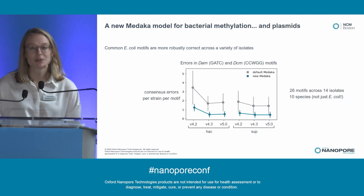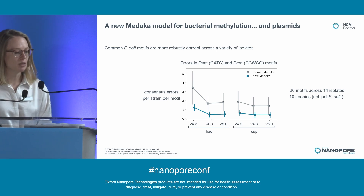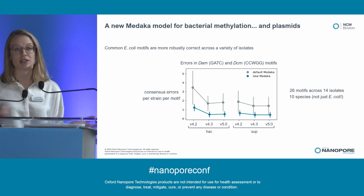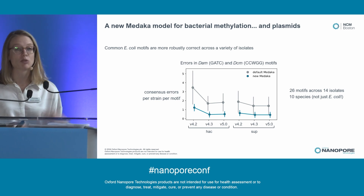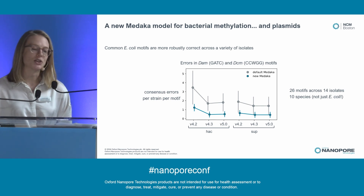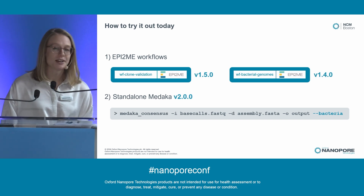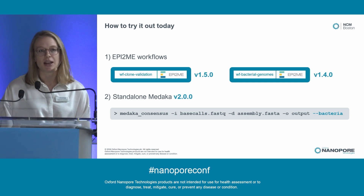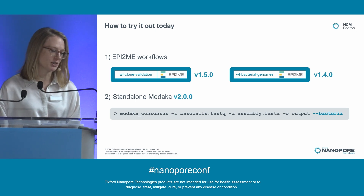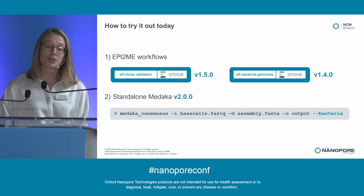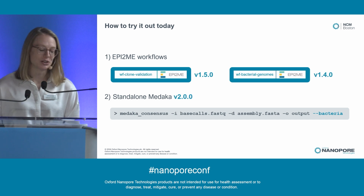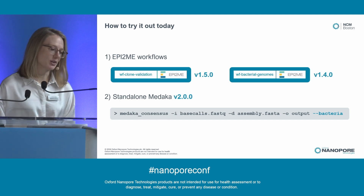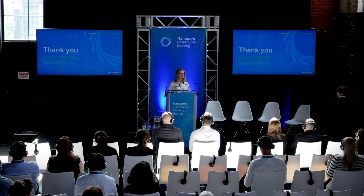For plasmids, we're often thinking about two particular motifs — GATC and CCWGG — that are common in E. coli. The new Medaka model provides significant improvements in these motifs, looking across a set of 14 isolates from 10 different species. We see really robust and improved performance with the new Medaka model across a wide range of base callers. This new Medaka model is released in both Epitome workflows — for bacteria and for plasmids. We highly recommend using Epitome: it's simple, easy to use, provides rich downstream analysis information, and always incorporates the latest advancements from the machine learning team. Both new versions are out now. If you'd like to try Medaka standalone, download version 2 just released and use the flag --bacteria when running consensus; it will automatically use the new model if compatible with your base calls.